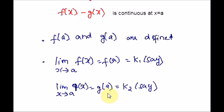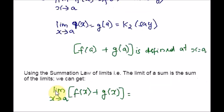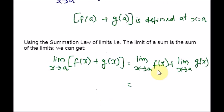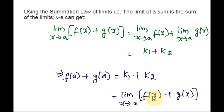Using these conditions, we can show that f(a) plus g(a) is clearly defined at x equal to a, because both f(a) and g(a) are defined, satisfying the first condition. Using the summation law of limits — the limit of a sum is the sum of the limits — we can split and apply the limit: limit as x tends to a of f(x) plus limit as x tends to a of g(x), which equals k1 plus k2. This implies f(a) plus g(a) equals k1 plus k2, which is nothing but the limit as x tends to a of f(x) plus g(x). Hence, the function f(x) plus g(x) is continuous at x equal to a.